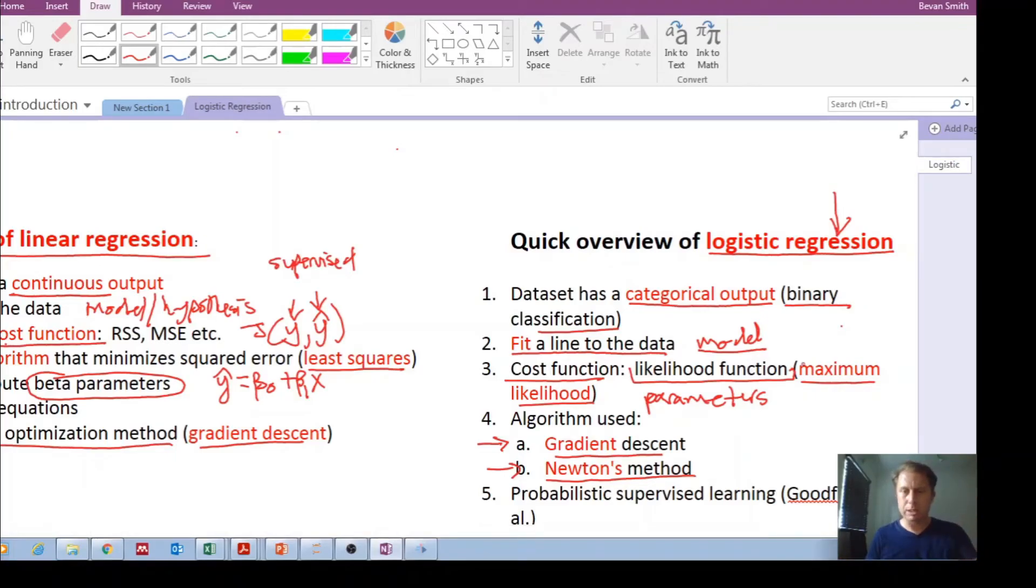Okay, so this is just a quick comparison between linear regression and logistic regression. The one is continuous output, the other one is a categorical output. Cost functions for linear regression are residual sum of squares, mean squared error, those types of cost functions. The cost function for logistic regression is a likelihood function.